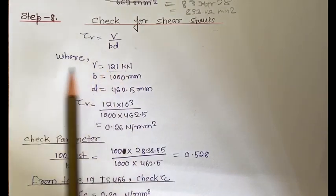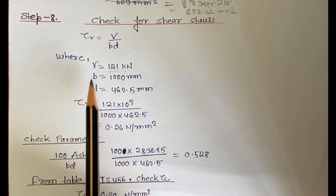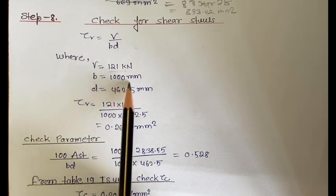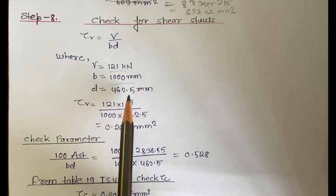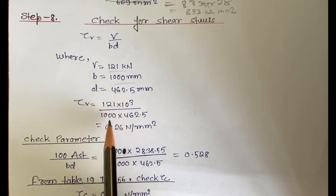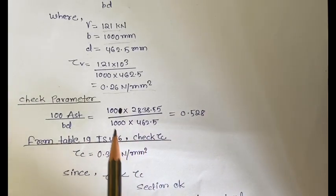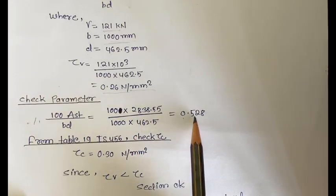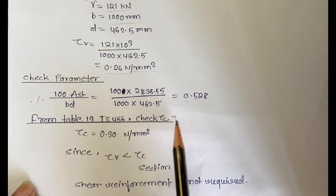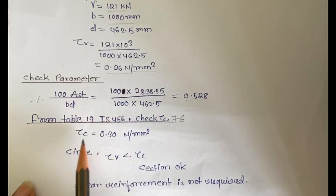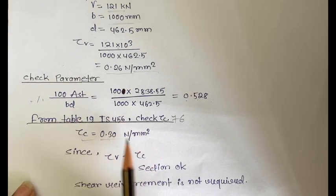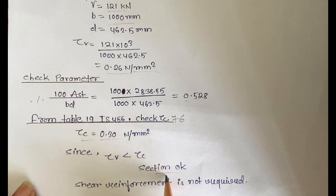We check for shear: tau_v equals V divided by (B into d) equals 121 into 10^3 divided by (1000 into 462.5), giving tau_v equal to 0.262 N/mm². Percentage of steel is 0.528%; from code book table (page 76) by interpolation, tau_c equals 0.30 N/mm². Since tau_v is less than tau_c, the section is safe and shear reinforcement is not required.